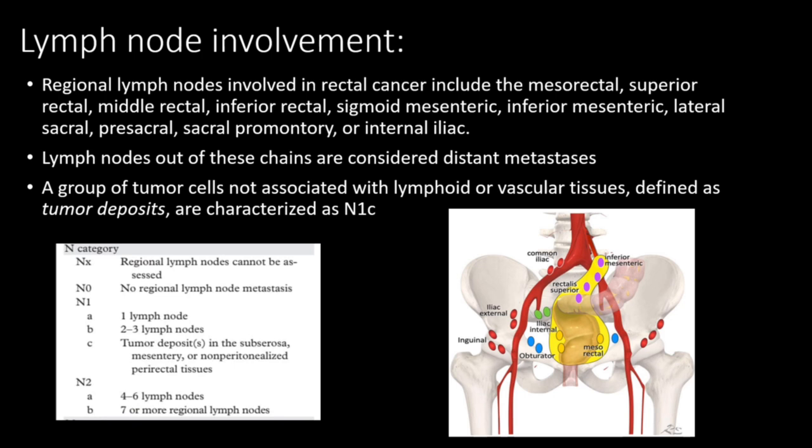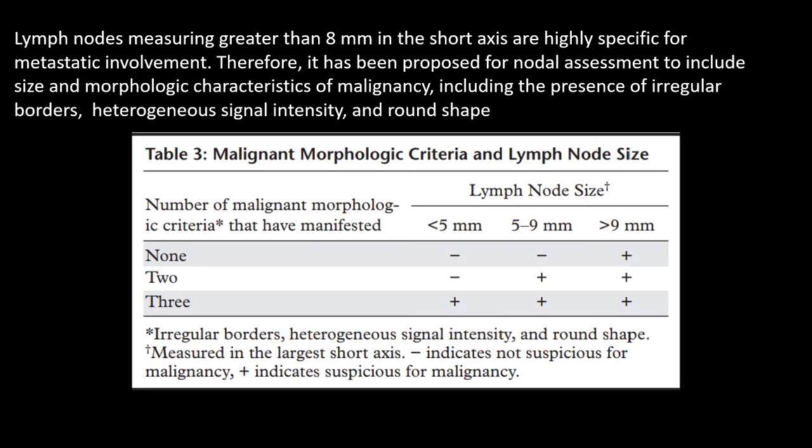In the N category: NX — regional lymph nodes cannot be assessed. N0 — no regional lymph node metastasis. N1A — 1 lymph node. N1B — 2 to 3 lymph nodes. N1C — tumor deposits in subserosal, mesentery, or non-peritonealized perirectal tissues. N2A — 4 to 6 lymph nodes. N2B — 7 or more regional lymph nodes. Lymph nodes greater than 8 mm in short axis diameter are highly specific for metastatic involvement. Morphological features of malignancy include irregular borders, heterogeneous signal intensity, and round shape. If greater than 9 mm, a single lymph node is considered positive. If 5 to 9 mm, 2 or more are considered positive. If less than 5 mm, 3 or more are considered positive.